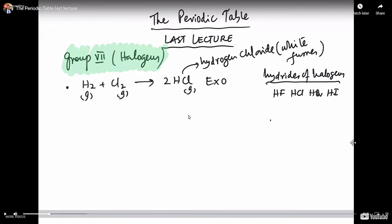Chlorine is the most famous element in group seven, but that does not mean other elements won't react. The other elements — bromine, iodine, fluorine, and astatine — will react in exactly the same way as chlorine does.